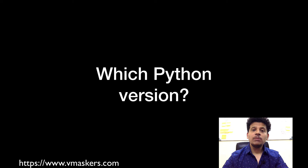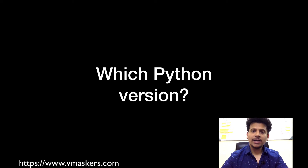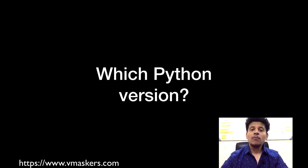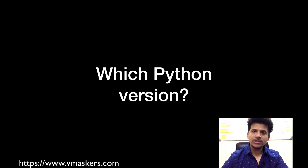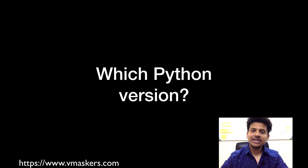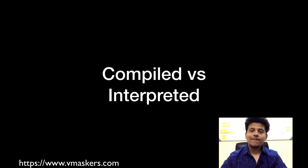We can install multiple versions of Python on the same machine. Python 3 is not backward compatible, meaning scripts written in Python 2 will not work correctly in Python 3. And most of the tools are written in Python 2. For this course, we are going to focus more on Python 2.7 and we will try to develop Python 3 compatible code.